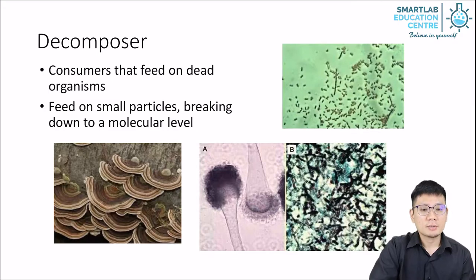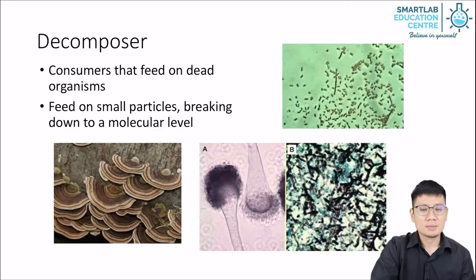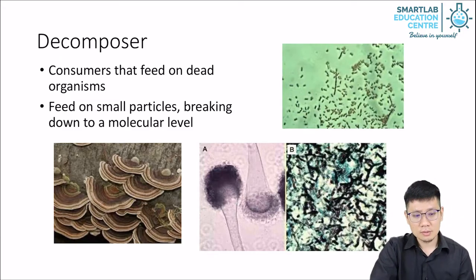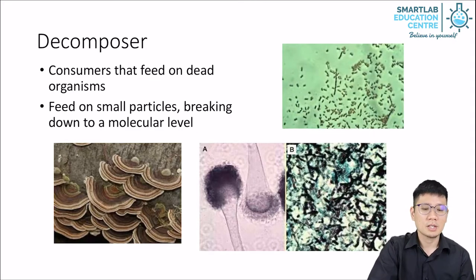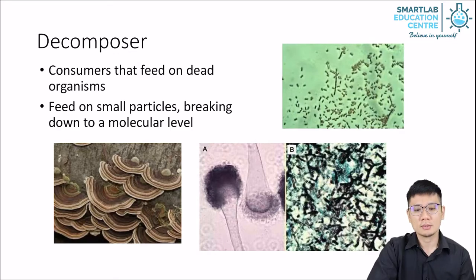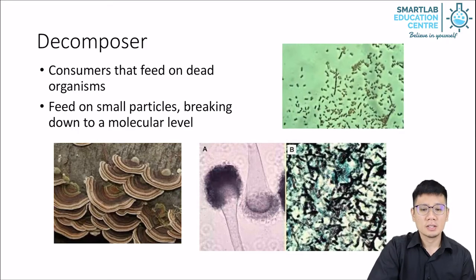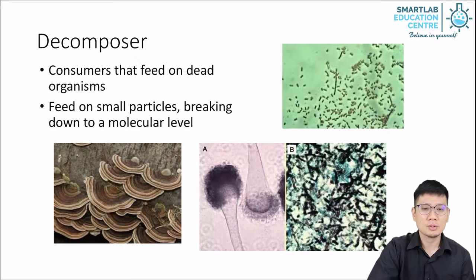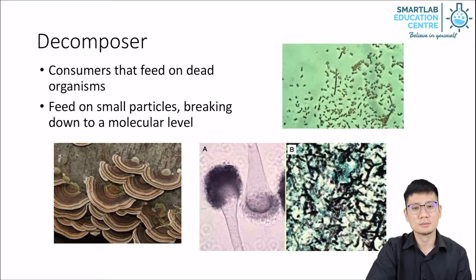Then we have the decomposers. The decomposers break down dead organisms and dead materials. But unlike the scavengers, decomposers feed on very small particles and they break things down into very simple molecules — to a molecular level. By doing this, the chemicals or molecules can be recycled. Plants are able to reuse them and grow, and that allows the cycle of nutrients to continue within a food chain.